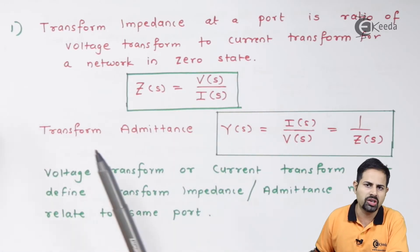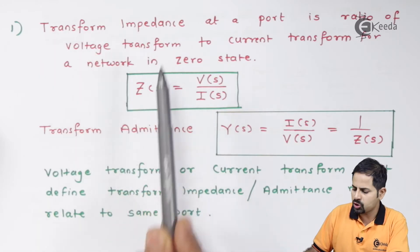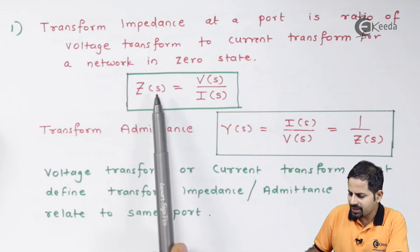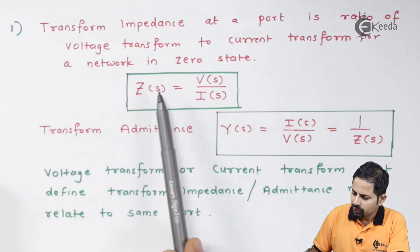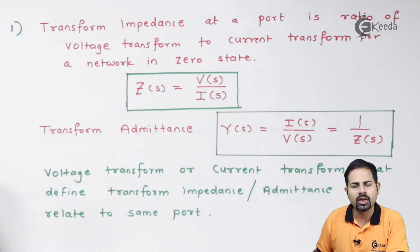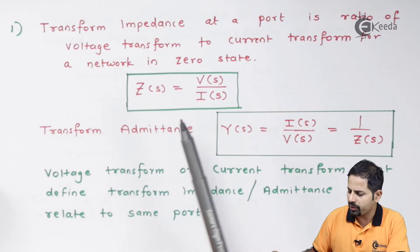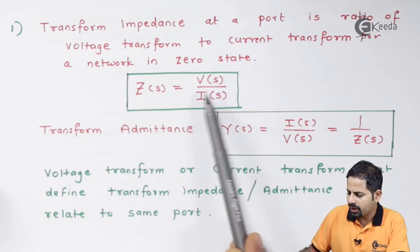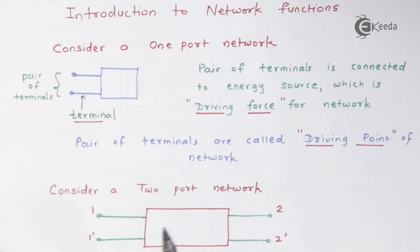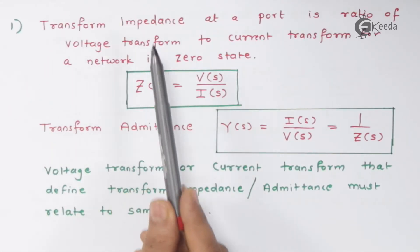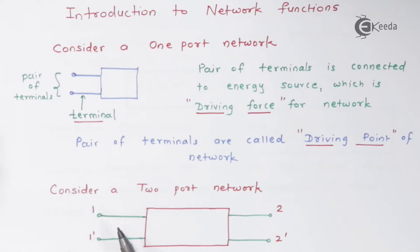Zero state means the network has no initial conditions. Transform impedance is Z of S, and everything is in the S-domain because it is transformed — not in the time domain, but in the S-domain as we use in Laplace. So Z(S) = V(S) / I(S), because impedance is voltage upon current. For example, for a two-port network, the input impedance at port one is Z11, requiring transformed voltage and current both at port one.